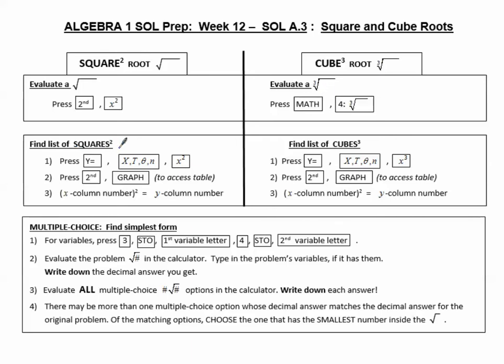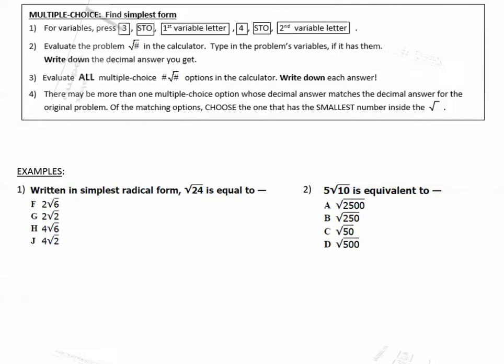Sometimes having a list of perfect squares is helpful, or a list of perfect cubes is helpful. Often we're doing multiple choice questions and we want to find simplest form. Like this example, number 1, written in simplest radical form, square root of 24 is equal to which of these?